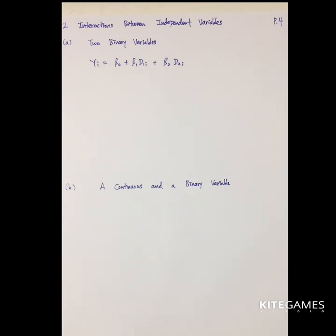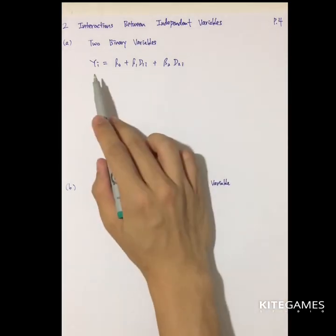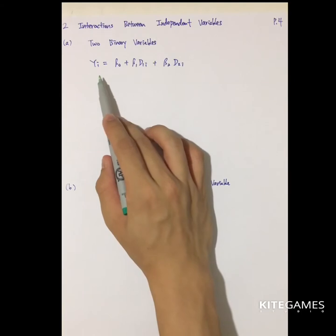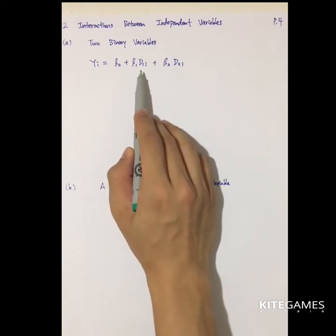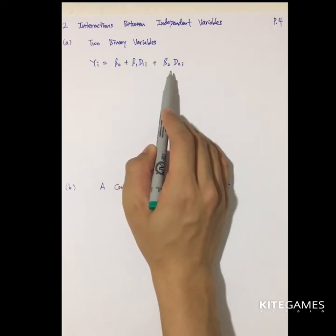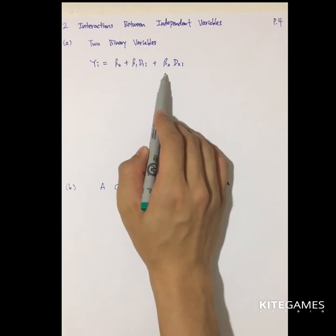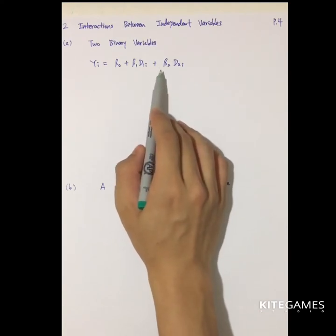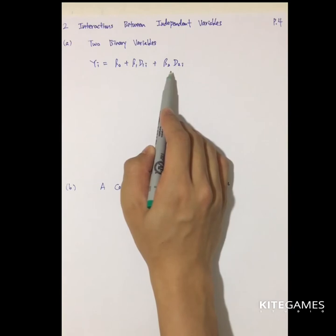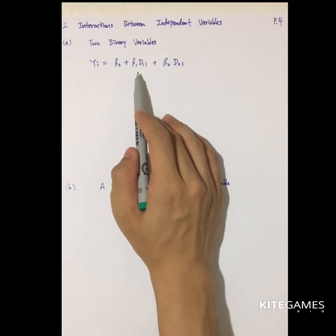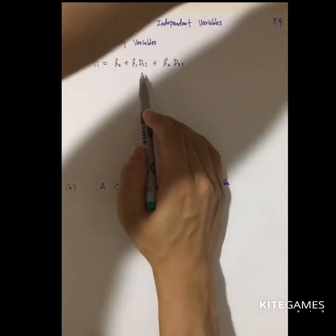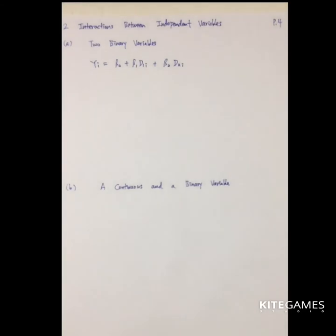Let's take a look at the first one. In the population, we assume the population regression model: Y_i = β0 + β1·d1_i + β2·d2_i, where both are dummy variables that can only be 0 and 1. The limitation is that the effect of a change in d1 or d2 — say the change in d2 — is the same regardless of whether d1 equals 0 or 1. Therefore, this is a limitation we should overcome.